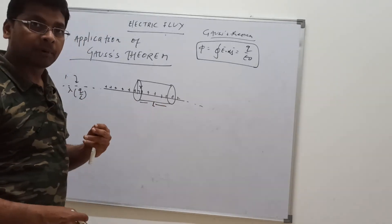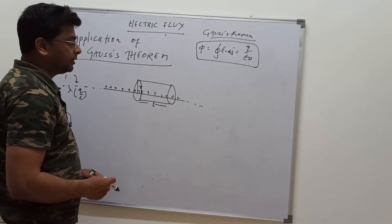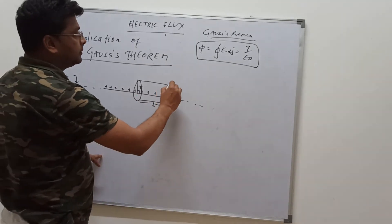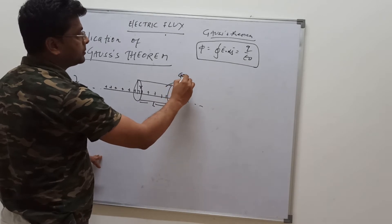This cylinder can enclose some part of the wire, so we can say there is some charge enclosed in that area. This surface is called a Gaussian surface.